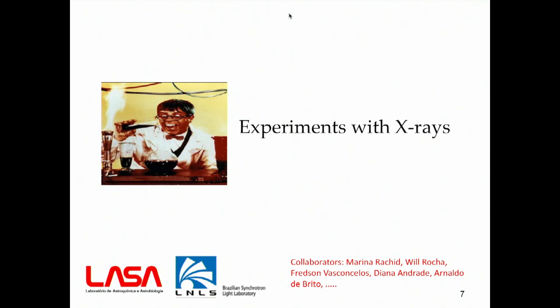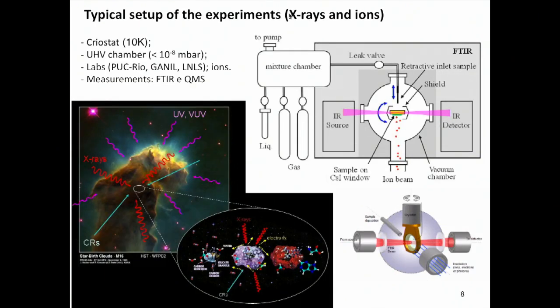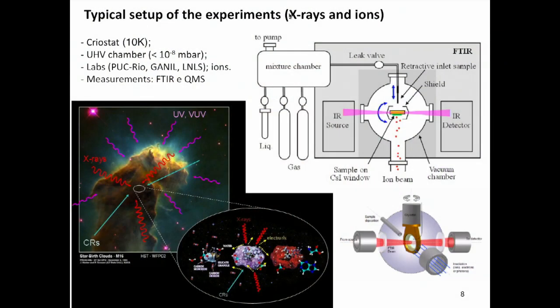Now I will move to some experiments with X-rays. Basically, the experiment, we have a cryostat, a crystal, in which we deposit molecules that can simulate the molecules that exist in space. And after this, we illuminate with X-rays and also with cosmic ray analogues. And in those experiments, we monitor the sample changes as a function of radiation dose from time to time using infrared spectroscopy. And we observe that we start from simple compounds, and after irradiation, we have the enhancement in the complexity of the sample.